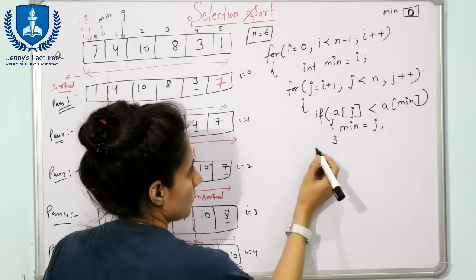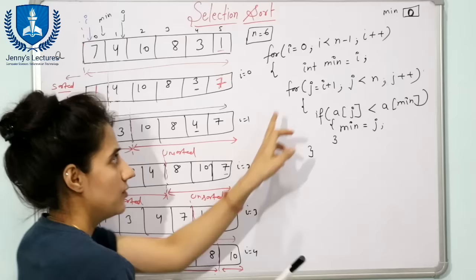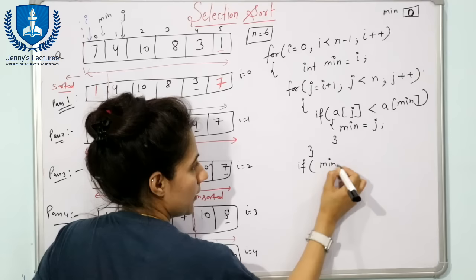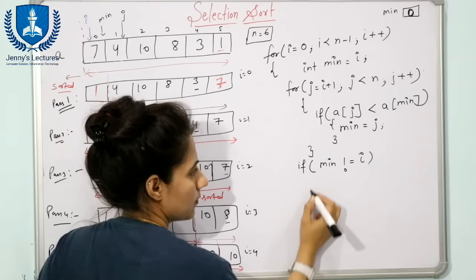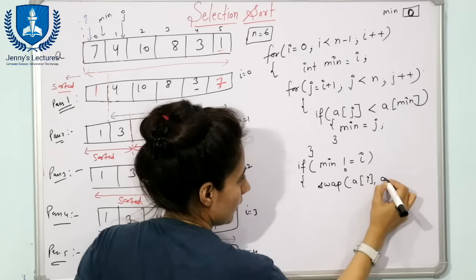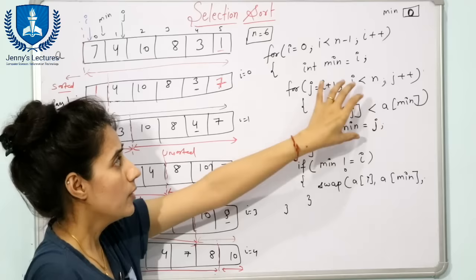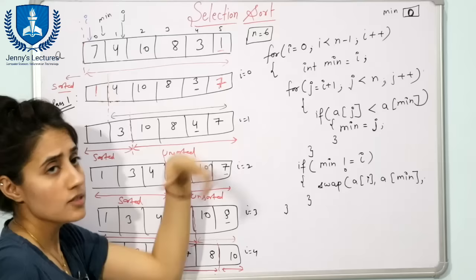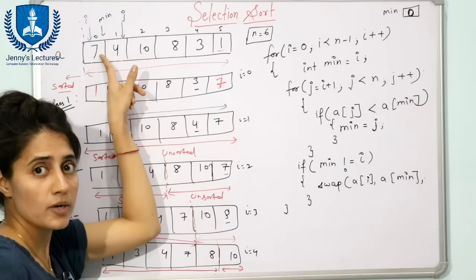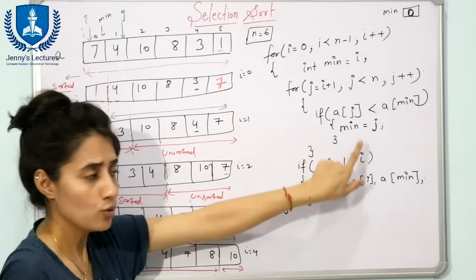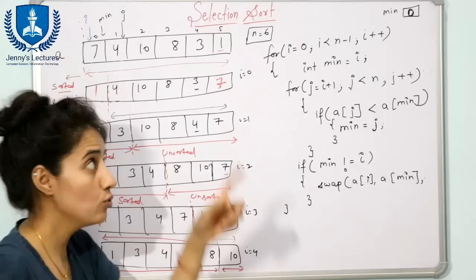After closing the inner for loop, we check: if min is not equal to i, then swap a[i] and a[min]. We check this condition because initially min was set to i, but if during comparison we found another element smaller, min was updated. So if min and i are not the same, we need to do the swapping.